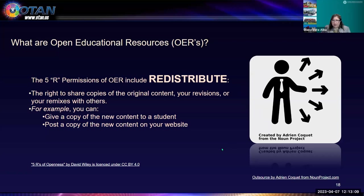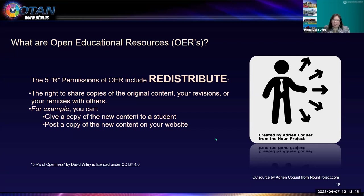Redistribute is the right to share copies of the original content, your revisions, or remixes with others. For example, you can give a copy to a student — similar to what my grant writing group is doing: we're going to revise that book and share it with our students. I can share it with other faculty, with anyone, add it to an OER repository, or post a copy on your website. You have the right to redistribute that original or revised work.